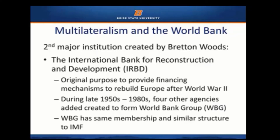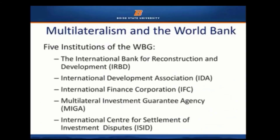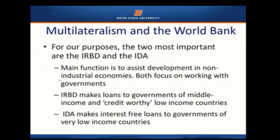There are five institutions in the World Bank Group, with the same structure and membership as the International Monetary Fund. When people say 'the World Bank,' they often mean either the IBRD or the International Development Association, the IDA — those are the two main ones. The other three we won't look at in detail. Both the IBRD and IDA provide funds and assist with economic development for non-industrial, developing economies.